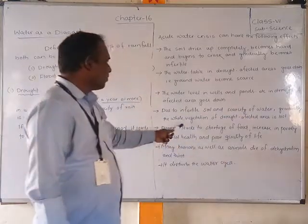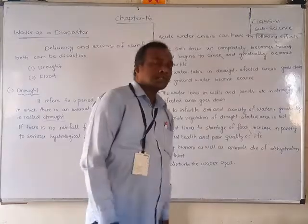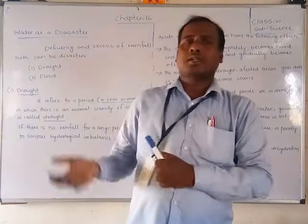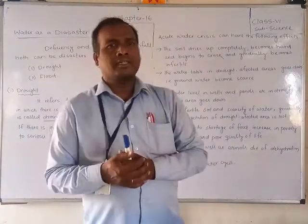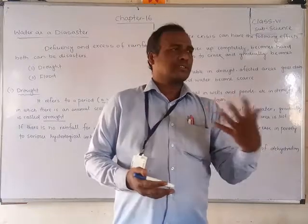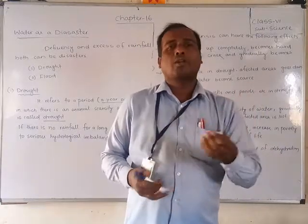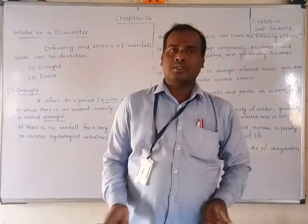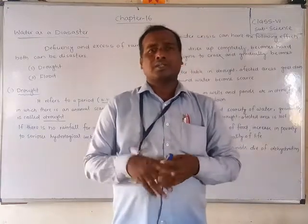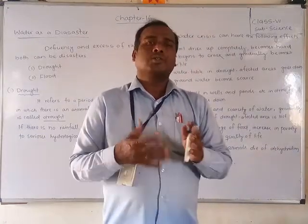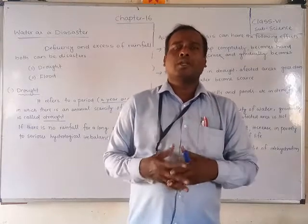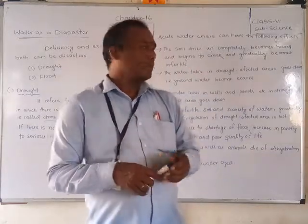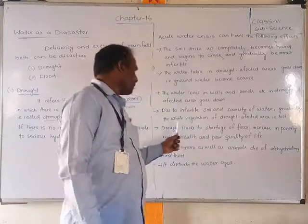Due to the infertility of the soil and scarcity of water, the vegetation of the drought-affected area is gradually lost. Because of drought, the soil becomes very hard and plants cannot establish their roots inside the soil properly, so they cannot stand and the whole vegetation is affected.